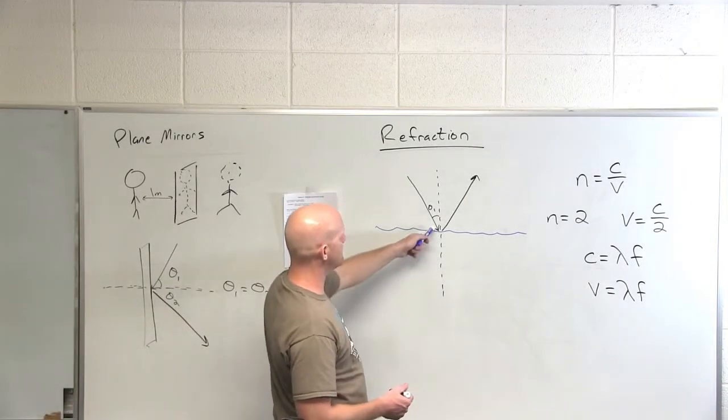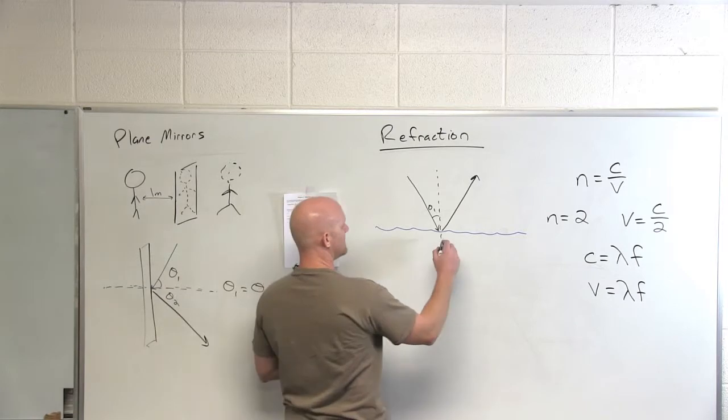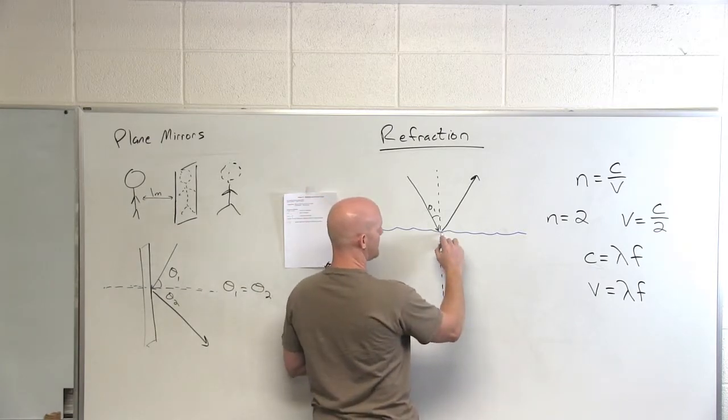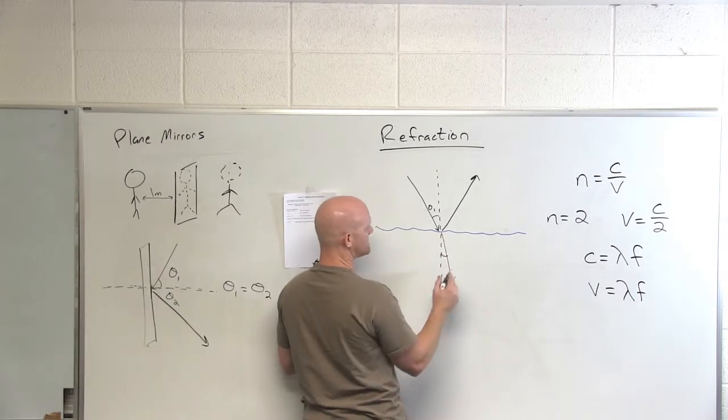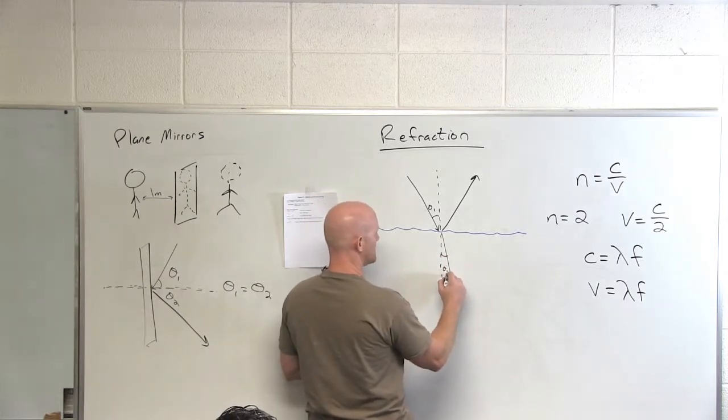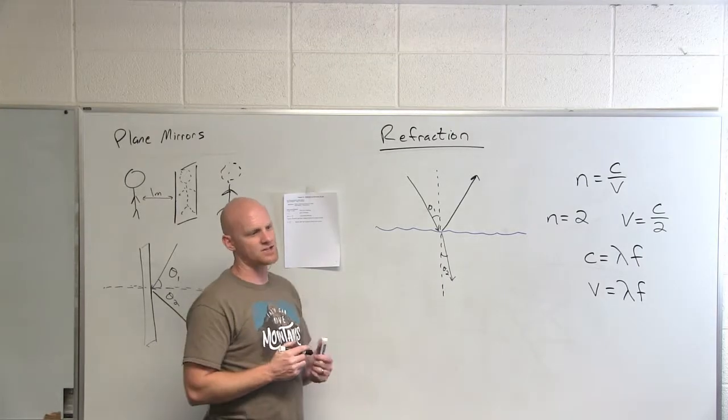If we look at what happens to this lovely light ray on the other side, it's not going to come through at the same angle. That angle's going to change, and this angle relative to the normal we'll call theta 2, and that would be the angle of refraction.